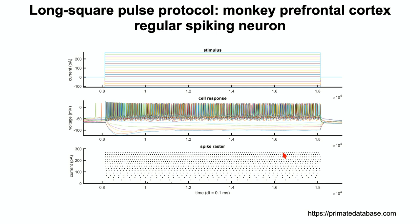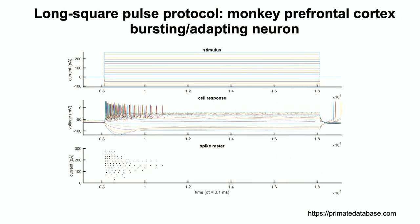But if you switch your electrode to another cell — most likely a pyramidal cell — and inject exactly the same current pulses, you get a completely different response. The cell fires a little at the beginning and then starts adapting: action potentials appear more and more slowly. We call this a bursting or adapting cell. No matter how long the pulse, the neuron will respond during perhaps the first 200 milliseconds and then stop responding. That's what we call an adapting cell.